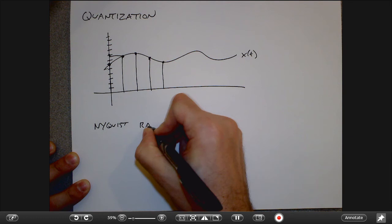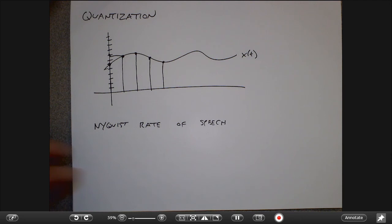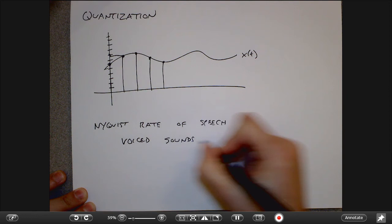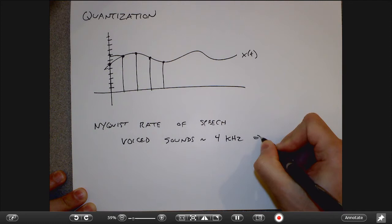So what is the Nyquist rate of speech? If you were to record yourself and figure out what the highest frequency was, for voiced sounds — when you put your finger on your throat and feel your vocal cords vibrating, like 'ah' or 'ooh' — those sounds generally have a frequency of about no more than 4,000 hertz. So voiced sounds are basically about 4 kilohertz, which means the Nyquist rate for that would be like 8 kilohertz.